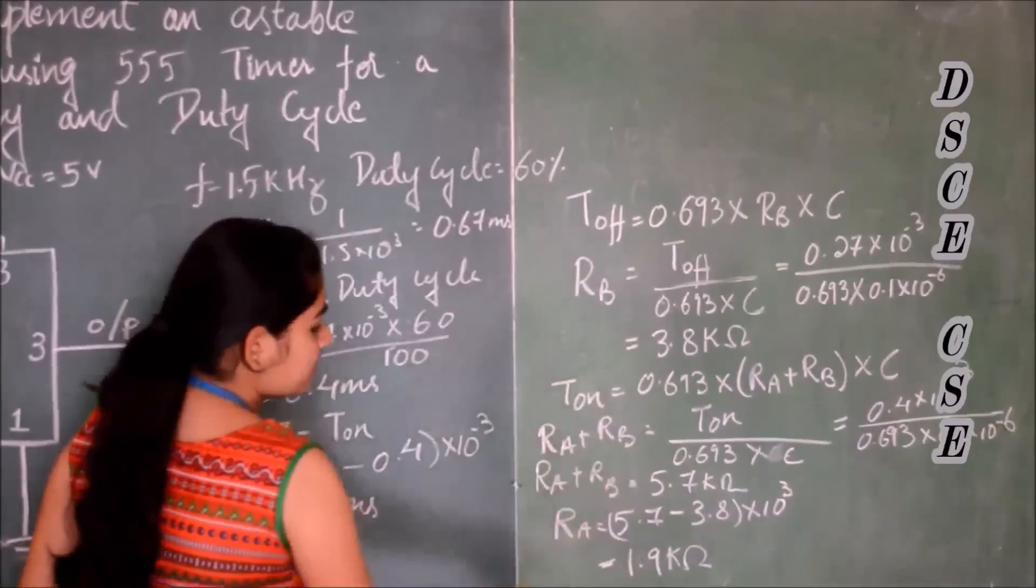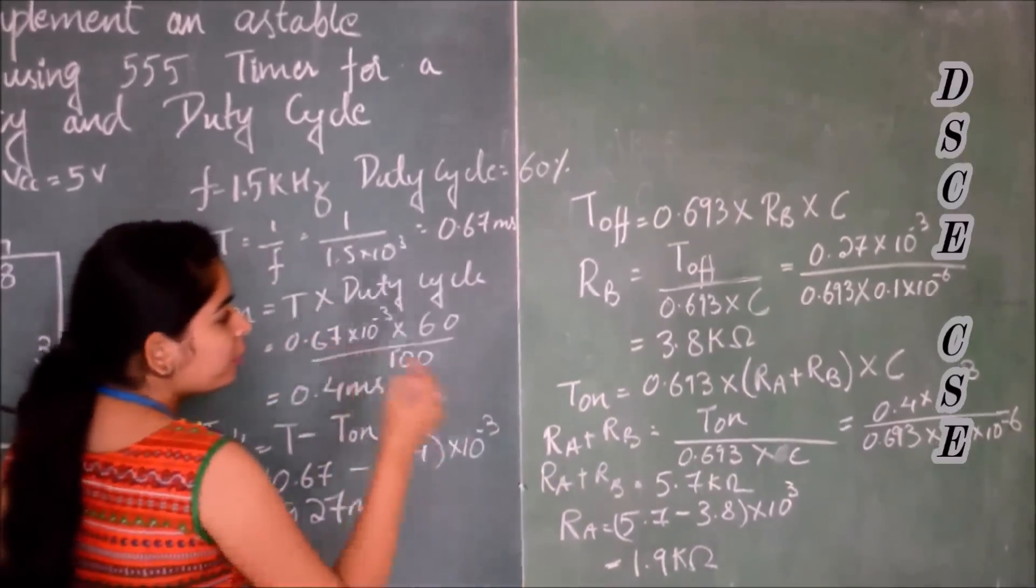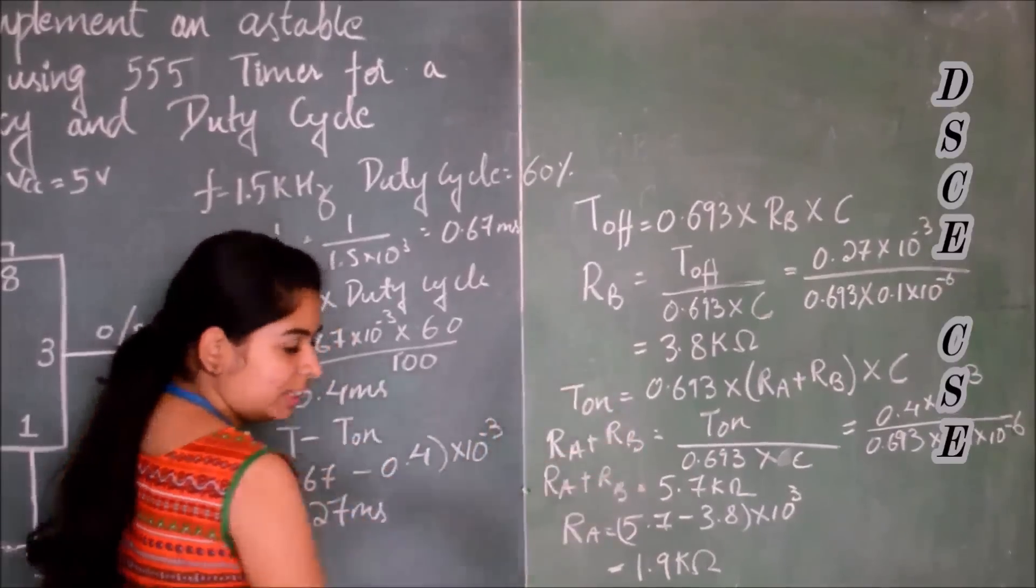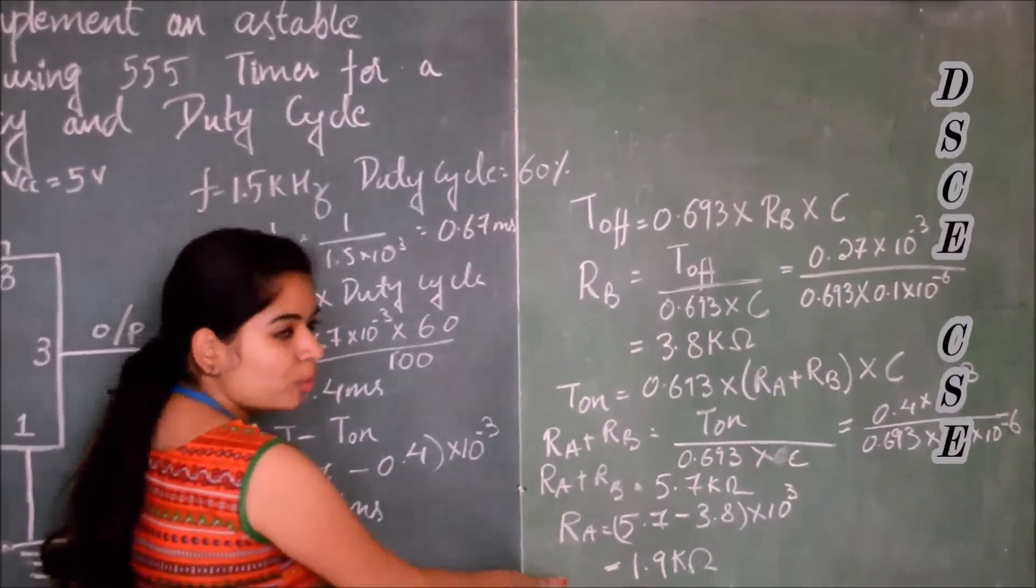The value of these resistors are not available. Therefore we take RA as 3.3 kilo-ohms and RB as 2.2 kilo-ohms.